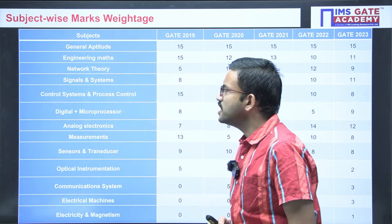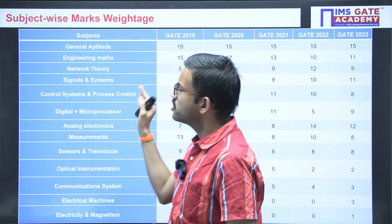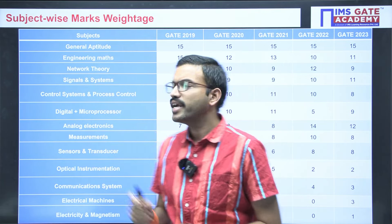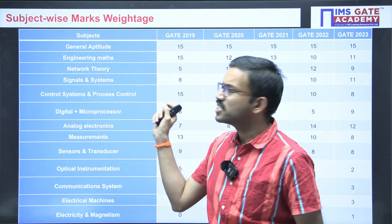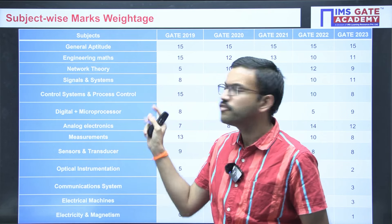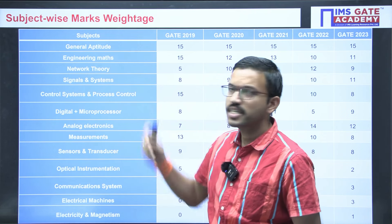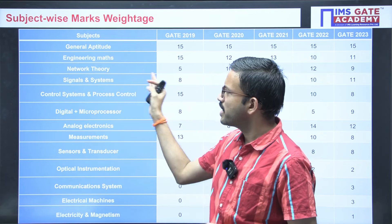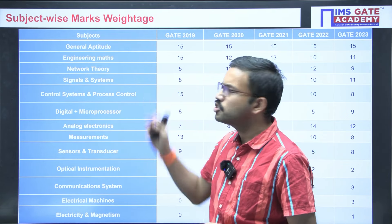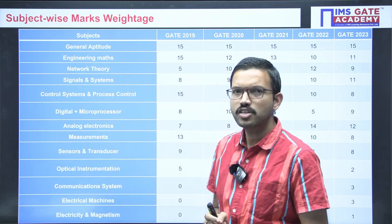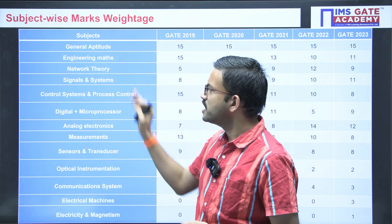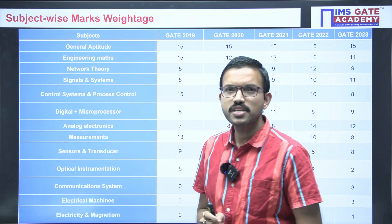Regarding general aptitude, most of the questions were easy and two or three questions were tough. Regarding engineering mathematics, around 12 marks were given, and regarding network theory, around 6 marks were given.